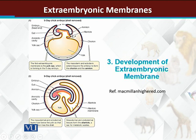On one side we can see the ectoderm and mesoderm merge and both rise upward. From both sides the mesoderm and ectoderm rise upward and eventually combine together. The inner flap that forms will become the amnion, and the outer flap will form the chorion.